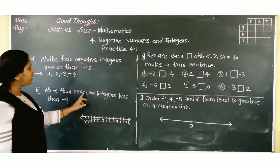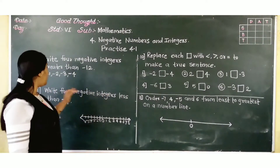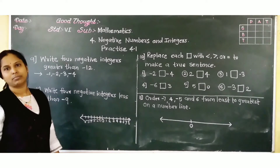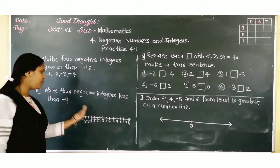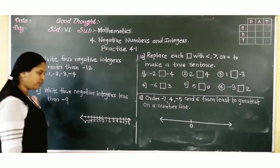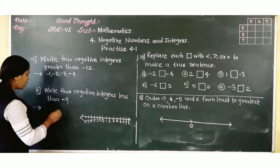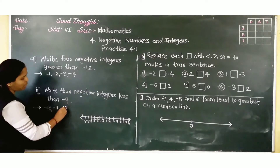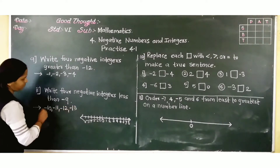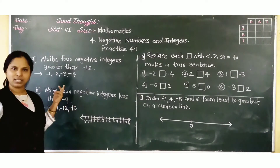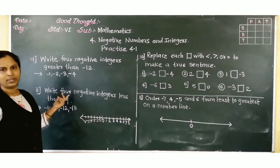Next: write 4 negative integers less than minus 9. Less than means you have to go towards the left side. So any of: minus 10, minus 11, minus 12, minus 13. They are less than minus 9.